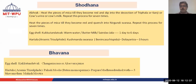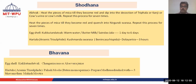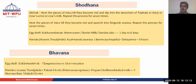Some examples of Shodhana for making Abraga Bhasma or Mika Bhasma: heat pieces of Mika until they become red and dip them into the decoction of Triphala, or Kanji, or cow's urine, or cow's milk, and repeat this process seven times. Another method given in Ayurvedic texts for Shodhana of Abraga: heat pieces of Mika until red and quench into Nirgundi Swarasa, repeating seven times.